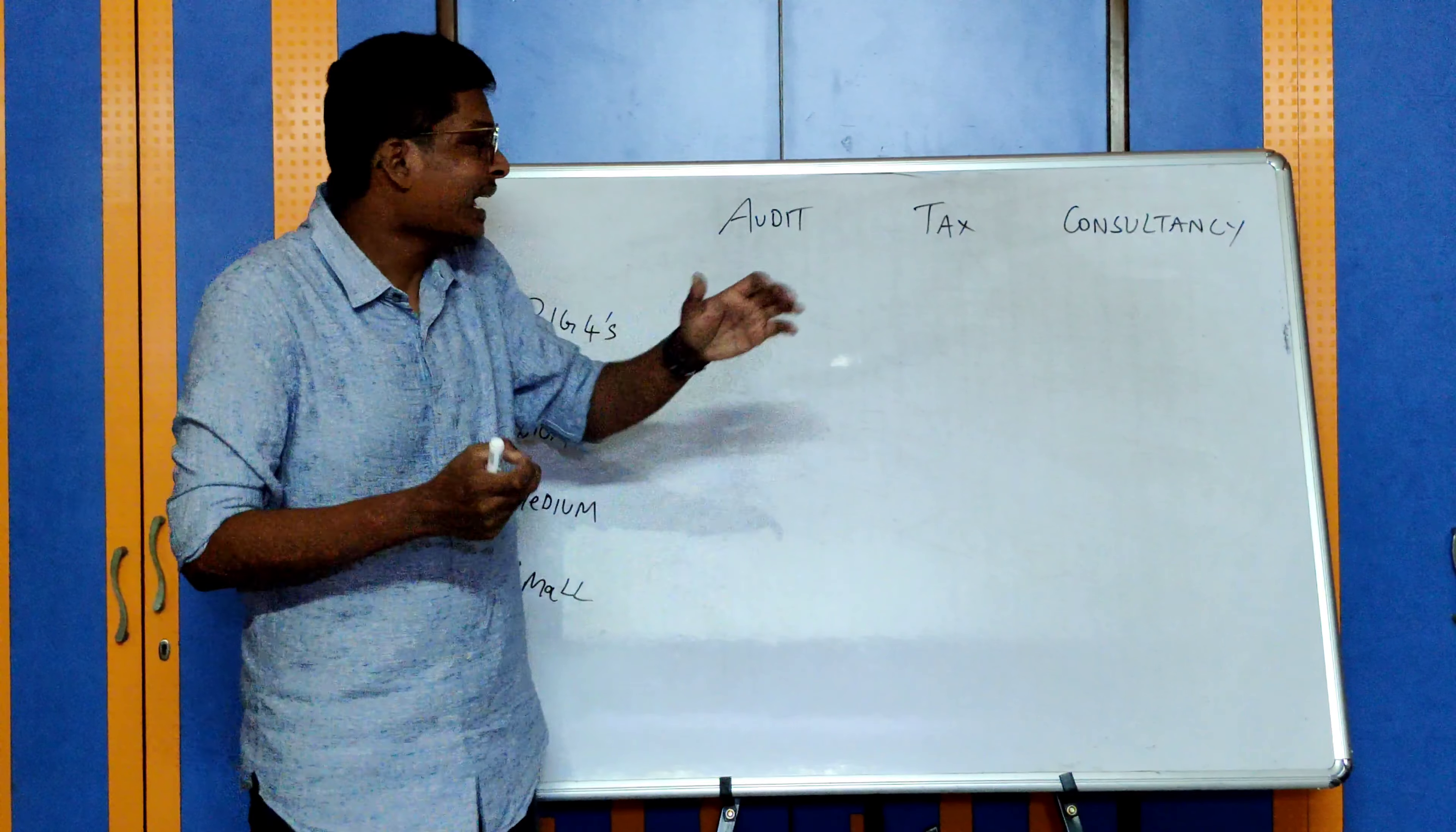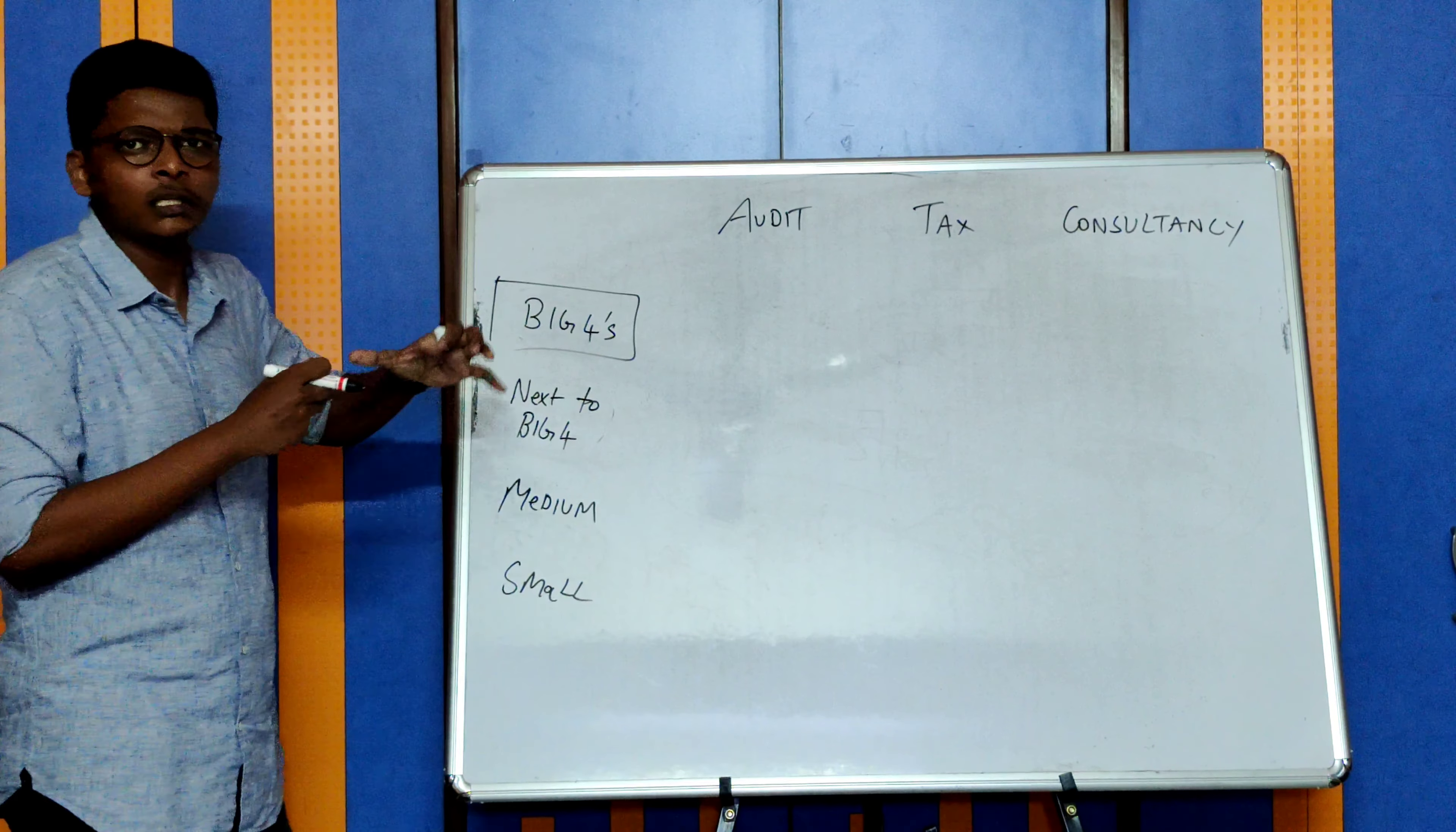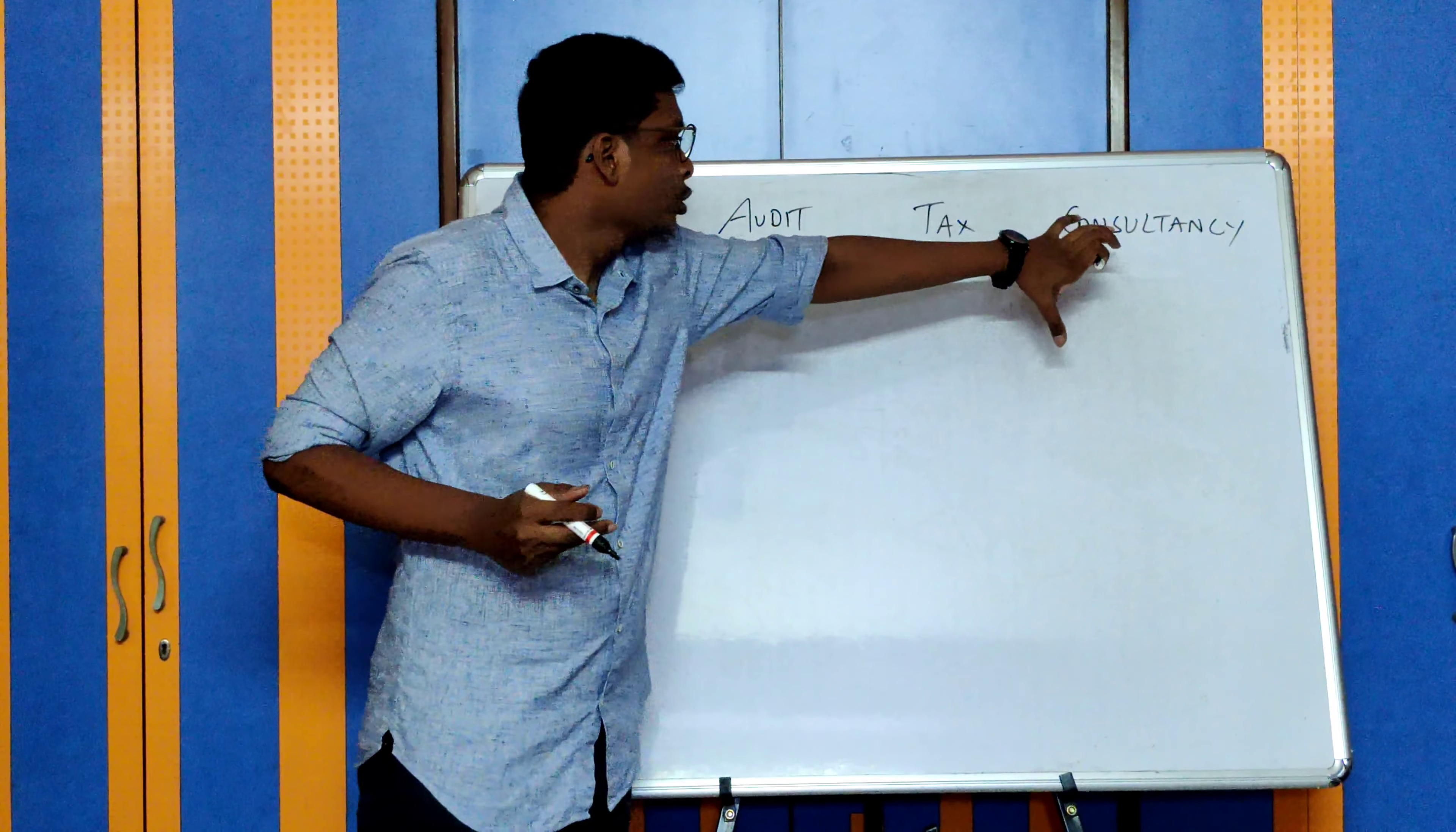Coming to the firms, we have four types of firms in India. This classification is not done by ICAI, it's just what I'm doing to help you understand it easily. First is the Big Four - the top four MNC firms operating in India. They operate in all fields: audit, tax, and consultancy. Anything which a firm offers other than audit and tax services is budgeted under consultancy services.